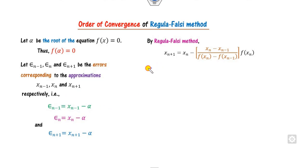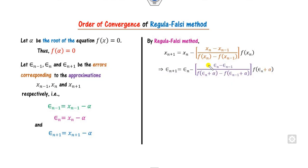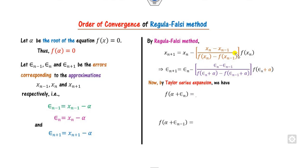Now I can substitute these values into the Regula Falsi formula to find x_{n+1}. We have x_n = alpha + epsilon_n and x_{n-1} = alpha + epsilon_{n-1}. Substituting, alpha cancels out and the remaining expression can be rewritten as shown. Our target is to find the values of f(alpha + epsilon_n) and f(alpha + epsilon_{n-1}). We use the Taylor series expansion because epsilon is a very small number, so we can expand and neglect higher powers of epsilon_n.